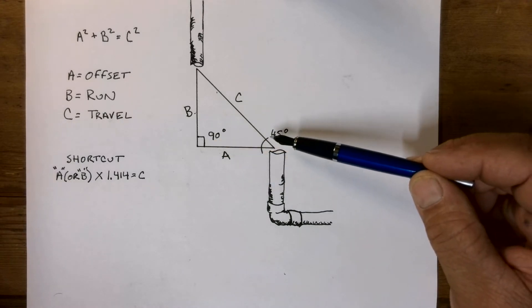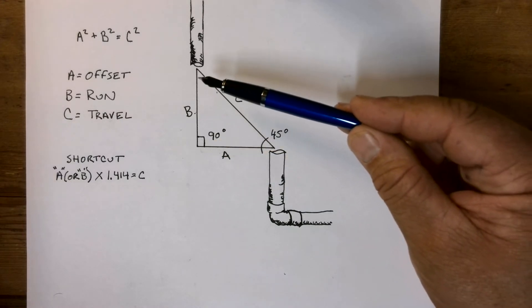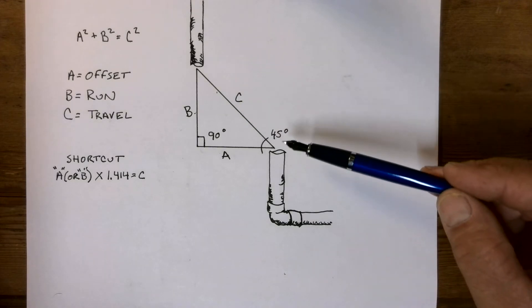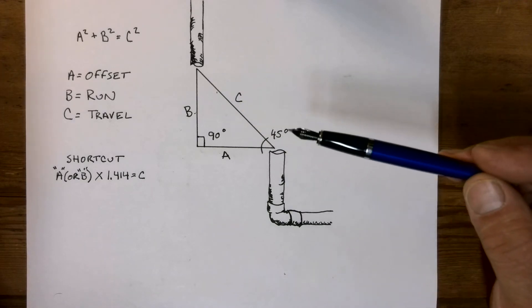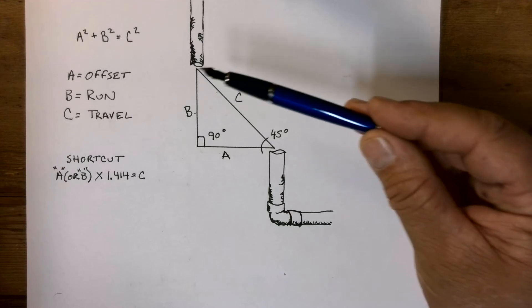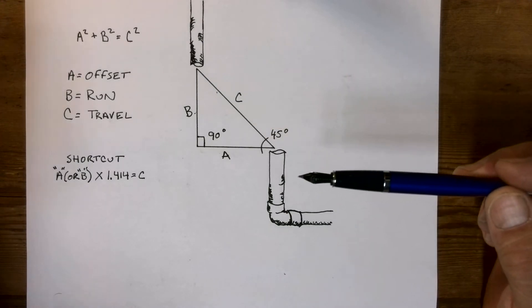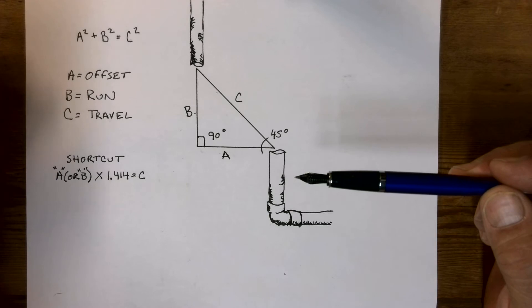When you have 45 here, you're going to have 45 degrees here, because 45 plus 45 is 90, plus 90 is 180. 180 degrees total for the triangle. If it doesn't have 180 degrees, it's not a triangle.